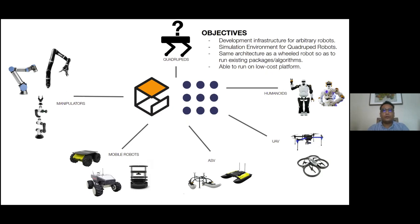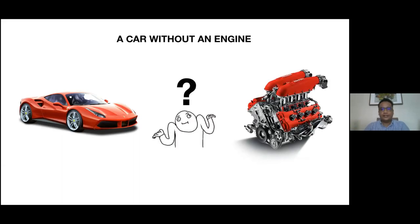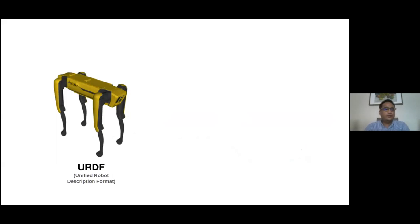So I came up with the idea to repurpose my first prototype and scale it up into a framework for multiple robots, with motivations like having a development infrastructure for arbitrary robots, a simulation environment, and the same architecture as real robots — to leverage existing ROS packages for fully autonomous operation, using off-the-shelf software modules like common filters, inverse kinematic engines, and all the packages available in the ecosystem.